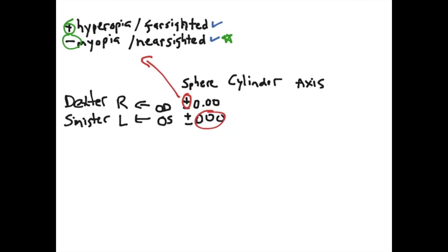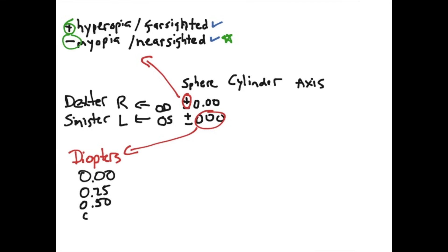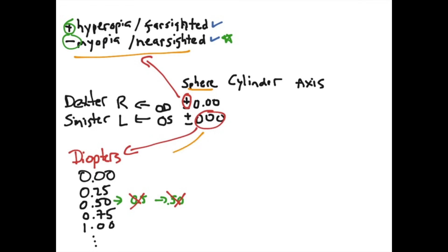The unit of measure for the sphere is diopters, and diopters come in 0.25 steps — so 0.0, 0.25, 0.5, 0.75, and so on. It is very important that you write out all the digits; you do not want to leave out digits because that leaves room for assumption about what the remaining digits are. The value of the number describes how farsighted or how nearsighted that individual is.